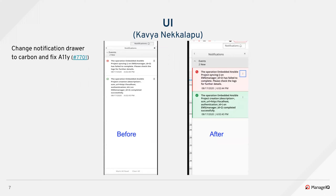Here is an enhancement — a change in notification to carbon components. This is also part of Accessibility 2. Earlier, keyboard access focus was not going to any of the applicable items in the drawer. In the right-hand side image, you can clearly see that focus is now going inside. There is more information and more screenshots in the PR, so if anyone needs more information, please check that.